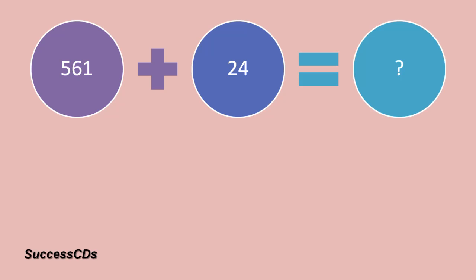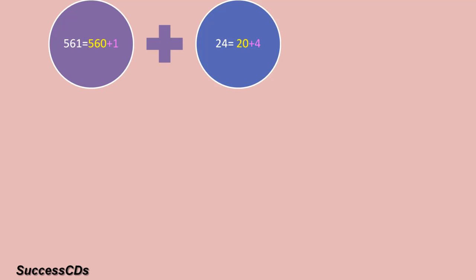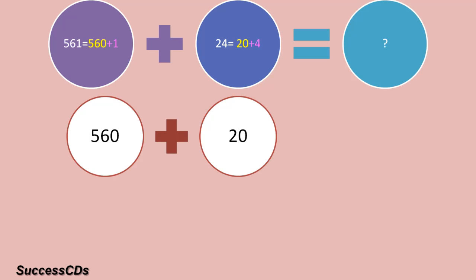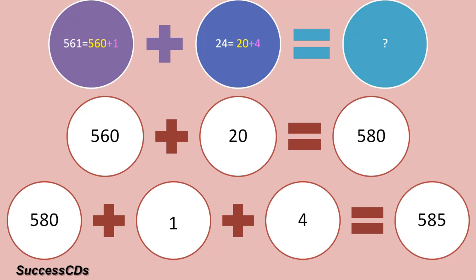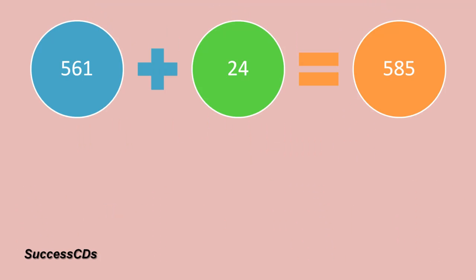Another example: 561 plus 24. Again we will round off. 561 is 560 plus 1, and 24 is 20 plus 4. We will add them accordingly: 560 plus 20 gives you 580. You had added 1 and 4 to them, so you will add them back. 580 plus 1 plus 4 gives you 585. So the answer to this is 585.